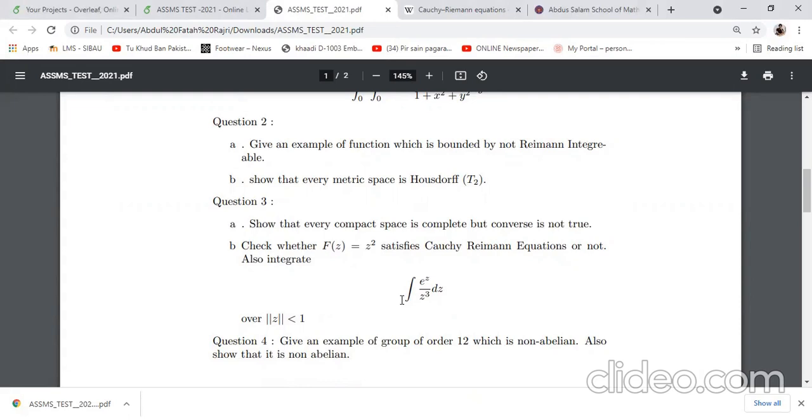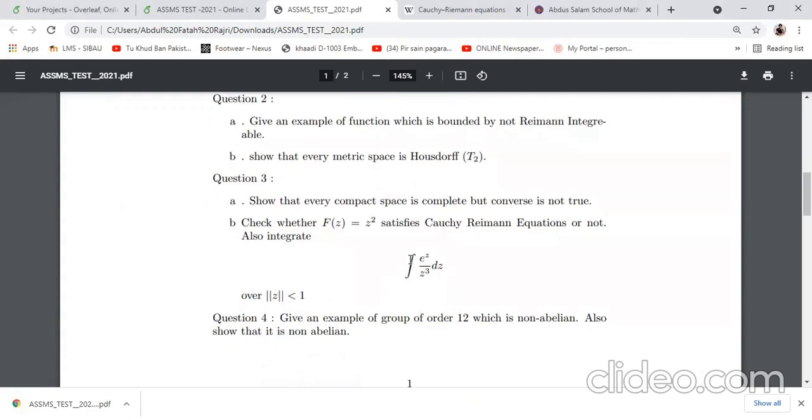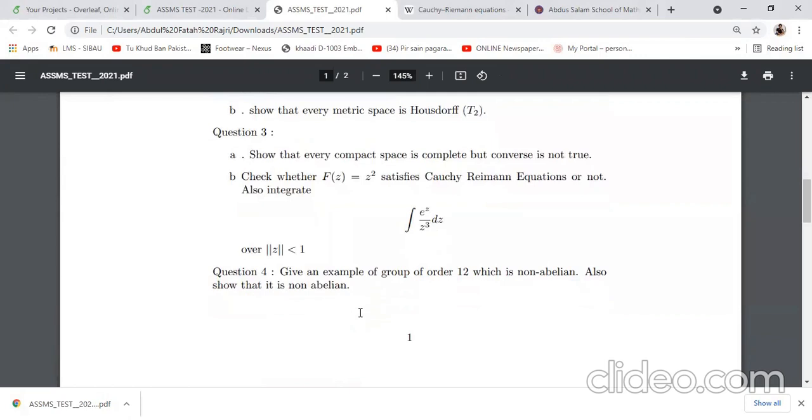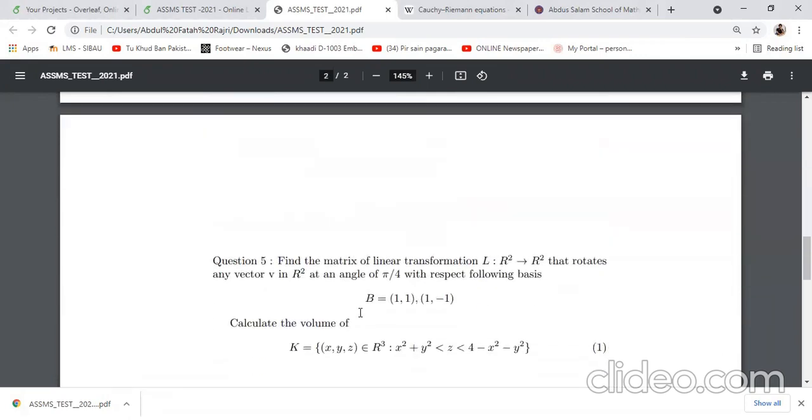Question number four: give an example of a group of order 12 which is non-abelian. Also show that it is non-abelian. In my opinion, D6 or A4 are going to be non-abelian groups of that order.